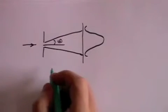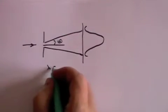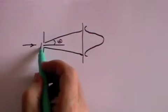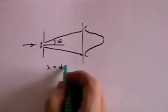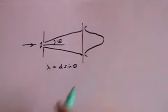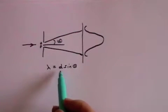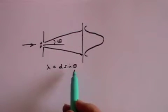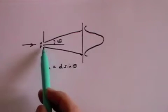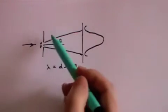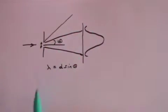And we have said that the wavelength lambda equals d, which is the width of the slit here, sine theta. Now since lambda doesn't change, it means that if you make d smaller, then the angle theta will increase. So as that slit gets smaller, this angle will get larger. The wave will spread out more.